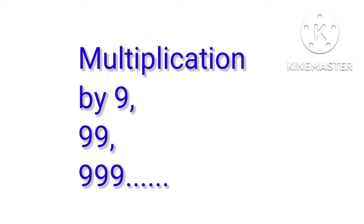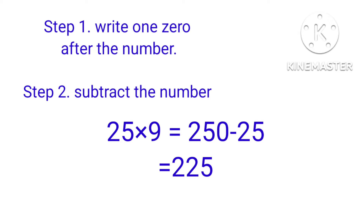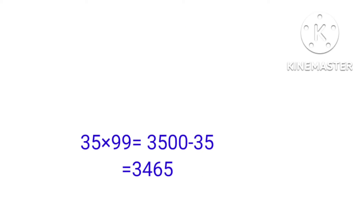Trick number 2: multiplication by 9, 99, 999 — that means a series of 9s. For 25 into 9: here 9 is a one-digit number, so write one zero after the number. Then subtract the number: 250 minus 25 equals 225.